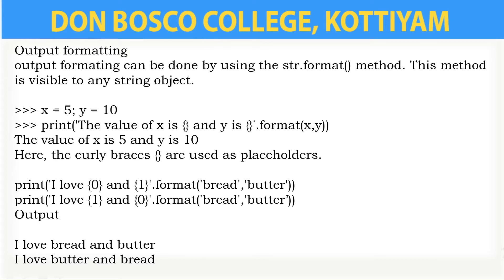By formatting our output, we will be using the str.format() method. For example, x is equal to 5, y is equal to 10. Using print() with double quotes: 'The value of x is' and using .format(x). The output will be the statement with the value of x printed to the screen. Then our function closes here.